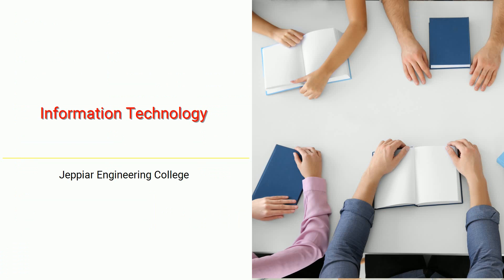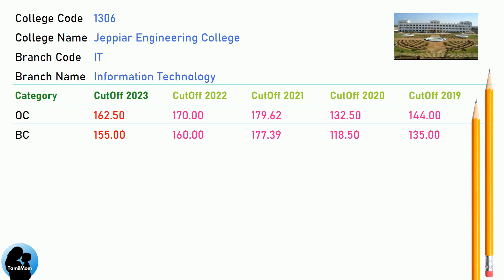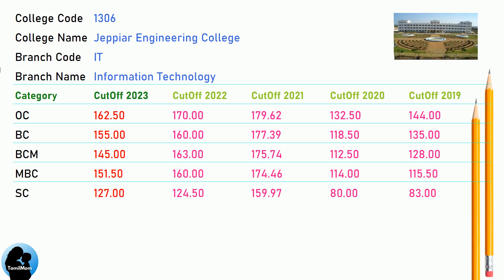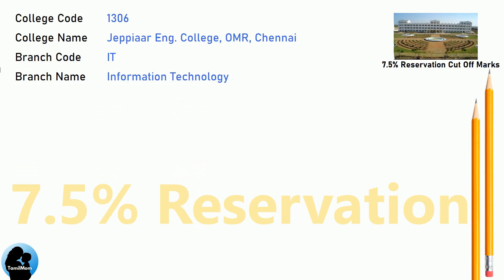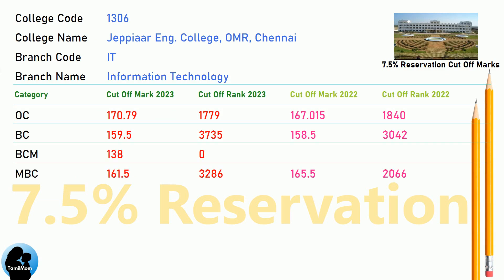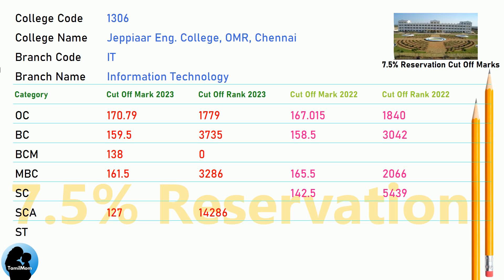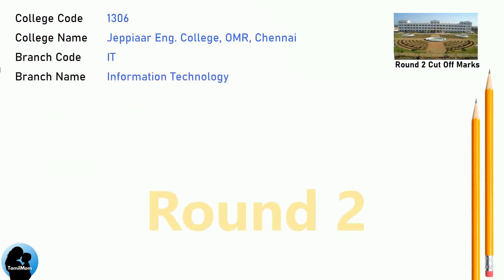DNA Cut-off for JPR Engineering College in Information Technology. DNA 7.5 Reservation Cut-off for JPR Engineering College in Information Technology. DNA Round 2 Cut-off for JPR Engineering College in Information Technology.